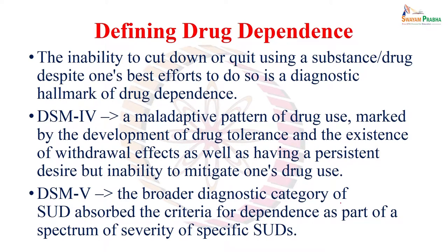Earlier, DSM-4 had defined drug dependence as a maladaptive pattern of drug use marked by the development of drug tolerance and the existence of withdrawal effects, as well as having a persistent desire but inability to mitigate one's drug use.